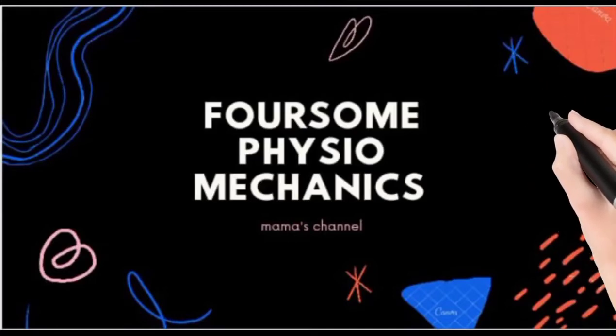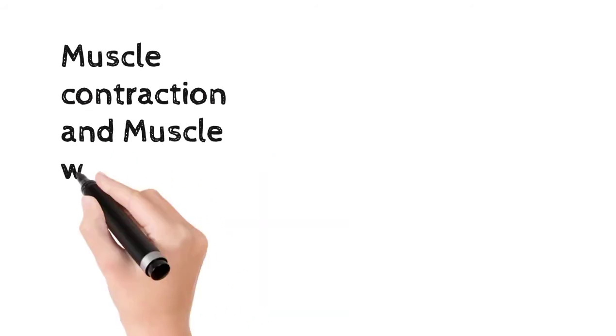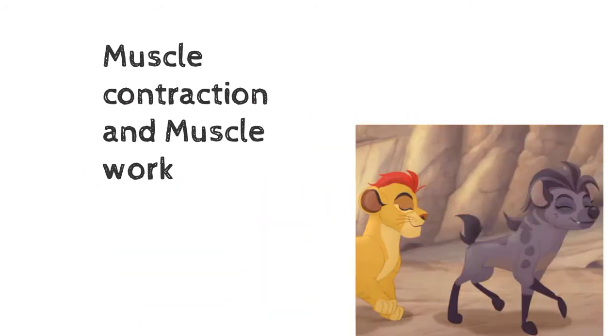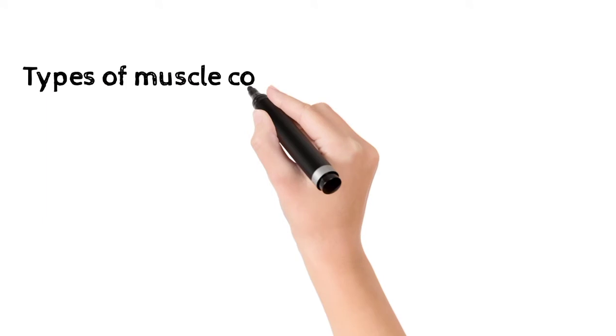Hey guys, welcome back to Foursome Physio Mechanics. Now we are going to discuss muscle contraction and muscle work. Muscle contraction is of two types: isometric contraction and isotonic contraction. Isometric contraction involves the development of force and intramuscular tension without any change in the length of the muscle.